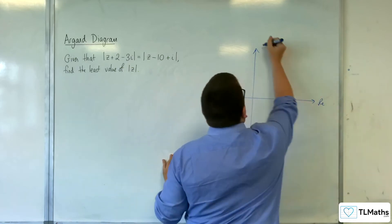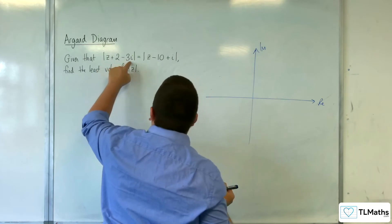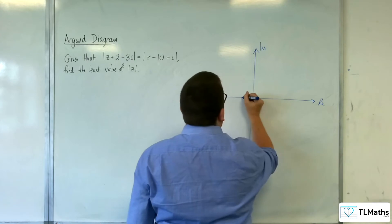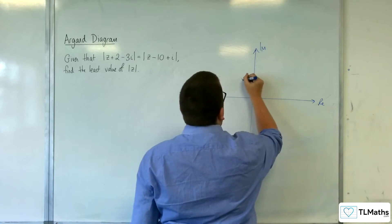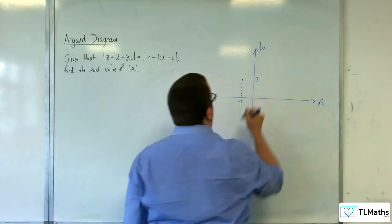Real axis and imaginary axis. We've got minus 2 plus 3i. So minus 2 on the real axis, 3 on the imaginary axis, somewhere here.